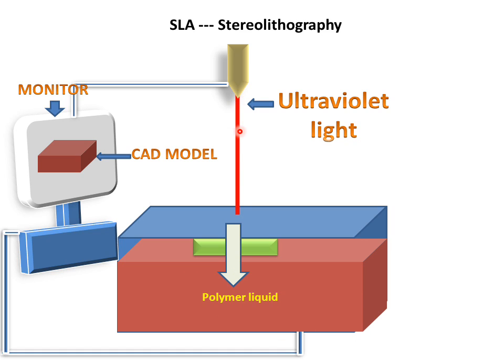When ultraviolet rays come into contact with the polymer liquid, it will solidify into layers, and these layers will combine together to make the final product. Now we will see the animation of the SLA process.